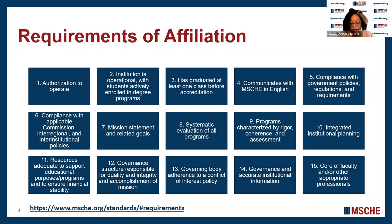These requirements are varied in their range and scope. The first two requirements, for example, require that institutions demonstrate that they are authorized to operate and are operational with students enrolled in their degree programs. These are demonstrated through charters and documents that state governments have allowed the institution to operate as an institution of higher education. There are other requirements that involve the provision of more extensive information about faculty, programs, or the institution's governance structure.